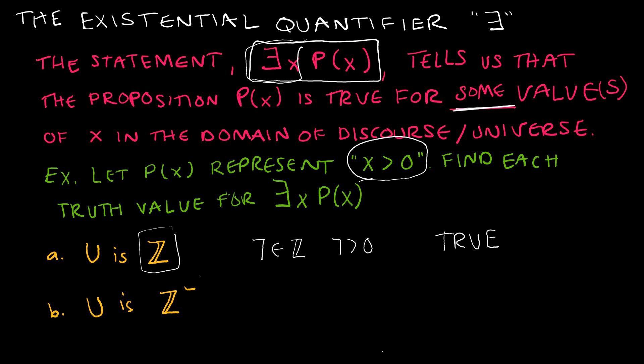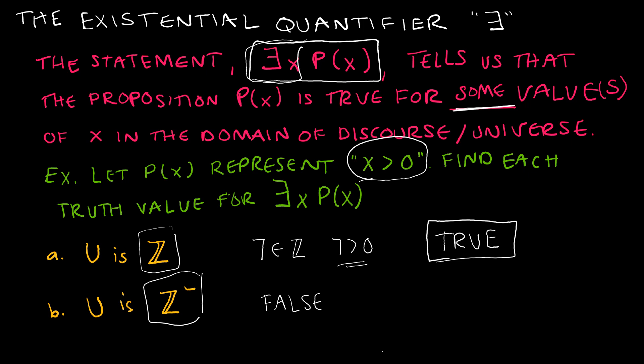Let's take a look at the negative integers — negative 1, negative 2, negative 3, etc. Can I find any one of those values that is greater than 0? All of those values are in fact less than 0 because they are negative, and therefore that is false. It's okay to just show an example for the true case, but for false it would require a proof, and we're not to that point yet.